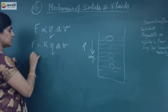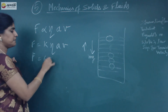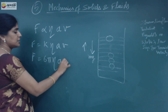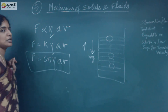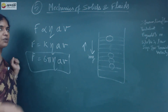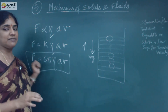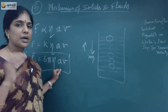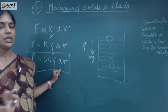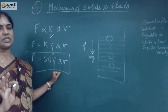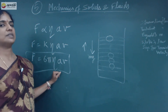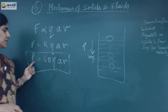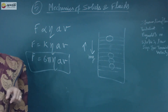The value of K he found to be 6π. So F is equal to 6πηav — this is Stokes' law, which is only for highly viscous liquid. Thus he found how the viscous force behaves for a highly viscous liquid. The formula is F equals 6πηav.